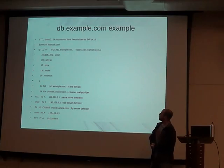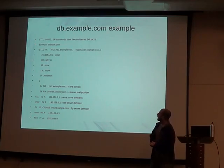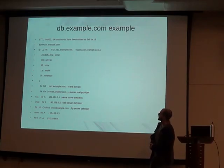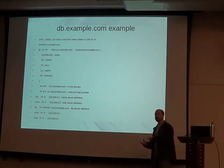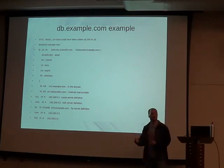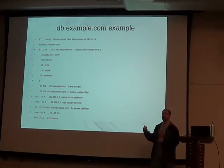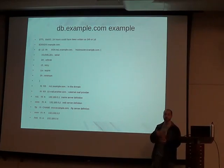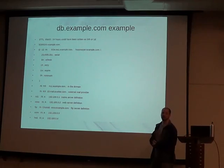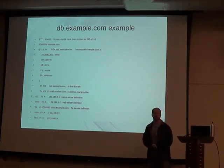Origin is the domain this zone is part of — in this case example.com. The next line is our SOA record. NS1.example.com is our server. Hostmaster.example.com is not actually a name — it's an email address, translating to hostmaster@example.com. If there are any issues with this zone file, that's the default address to email. You take your email address, replace the @ symbol with a period, and you have your entry for that.